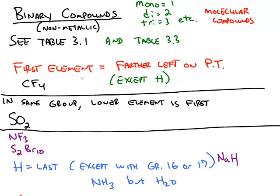The rule is the first element listed is always the one that's farther left on the periodic table, except if it's hydrogen. For example, between carbon and fluorine, carbon is farther to the left, so carbon is written first.